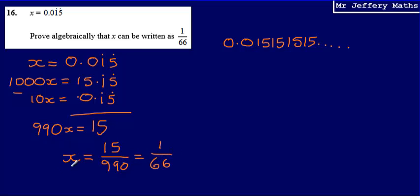And so what I end with is I'm saying that x is equal to 1 over 66. What I started with was x equals 0.015 recurring. So I've gone from having my recurring decimal to having my fraction at the end and essentially stating that they are the same.